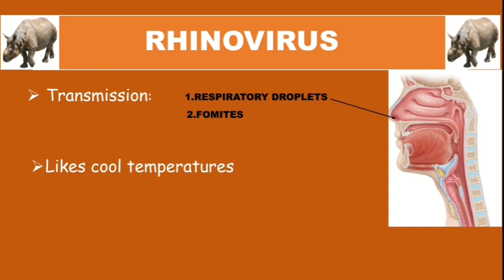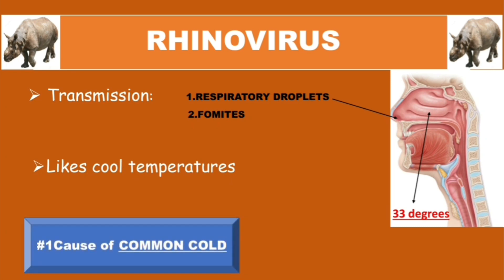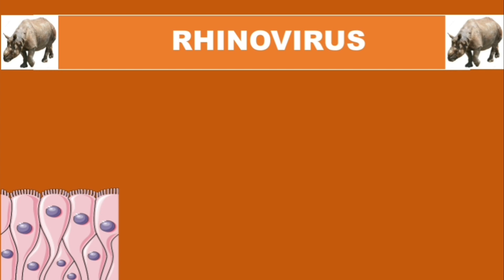Rhinoviruses prefer cool temperatures. In our body, the best place for them is the upper respiratory tract, where the temperature is about 33 degrees Celsius. The most important thing to remember is that the rhinovirus is the number one cause of the common cold in humans.